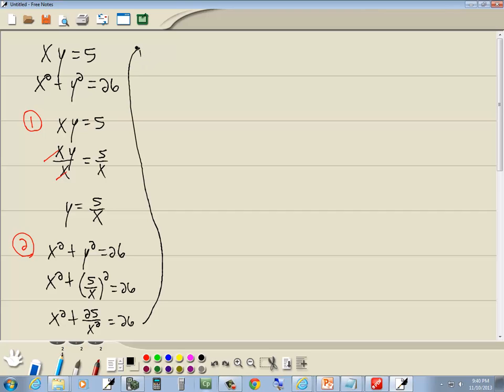Now we're still solving this. This is a rational equation at this point, and we solve the rational equation by first getting rid of the fractions. Multiply everything by the LCM of all our denominators. We only have one denominator, the x squared, so we're going to multiply everything by x squared. So I take x squared times x squared, x squared times 25 over x squared equals 26 times x squared.